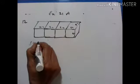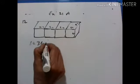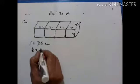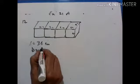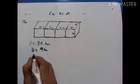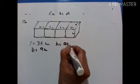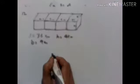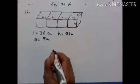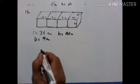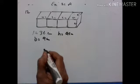Breadth is the same — breadth is 9 centimeter, and height is equal to 9 centimeter. Now we have to find the total surface area and volume of the resulting cuboid.